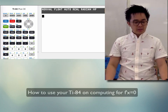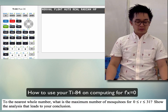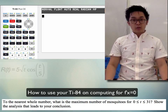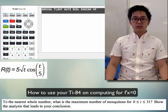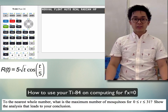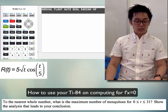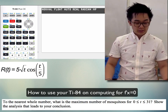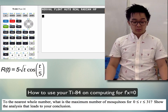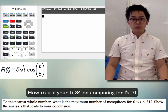Going back to the 2004 FRQ, we are asked to find the maximum number of mosquitoes given our derivative function, or the rate of change function r(t). In calculus, to find the critical number we set our derivative equal to 0, which helps us answer part (d) asking for the maximum number of mosquitoes given the rate of change function.